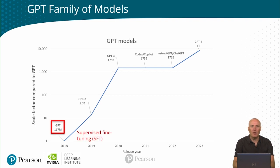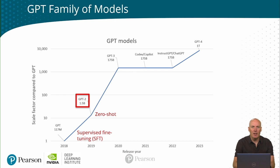As already described, for GPT-1, the focus was supervised fine-tuning for the end task, but they also demonstrated some ability of zero-shot learning. GPT-2 is a scaled up model and they explored the zero-shot capabilities further. For GPT-3, it was scaled up further and the focus was on few-shot learning, which is something we will describe in a little bit.